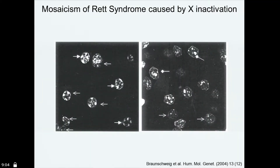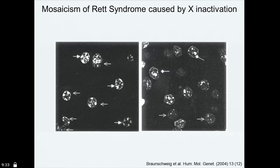Rett syndrome in the classic form is caused by the mutation — the loss of the gene MECP2, which is localized in the nucleus and is a controller of gene expression. Since it is on the X chromosome, it is actually characterized by mosaicism. This is the immunostaining for MECP2, which appears as a little dot inside the cell nucleus. When you have heterozygous females, you see cells that have normal MECP2 staining, but you also see cells that are basically not staining — and that's the expression of mosaicism, at least for this disease.